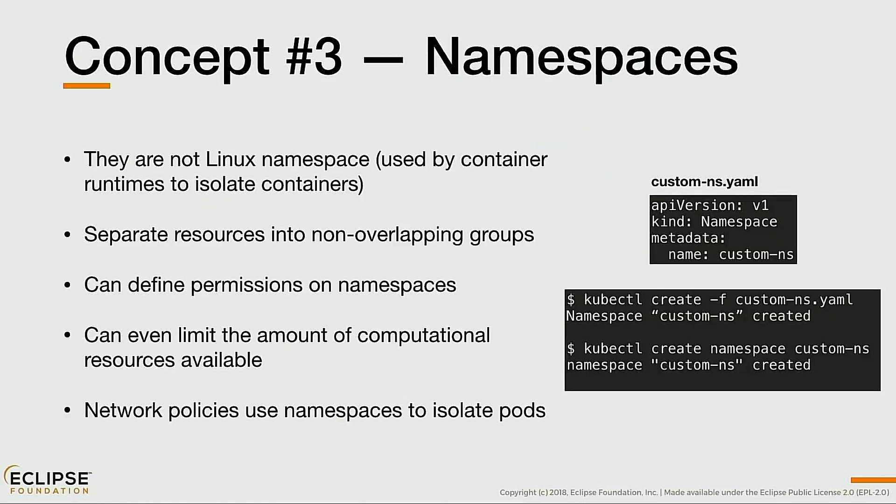Namespaces — and I'm not talking about Linux kernel namespaces that isolate containers from each other. Kubernetes namespaces let you separate resources into non-overlapping groups. You can define quotas, permission restrictions, and isolate pods created within a namespace. You can grant a user permission to only create pods inside a specific namespace. You can also create network policies so that pods in one namespace cannot reach or be reached from pods in another namespace.